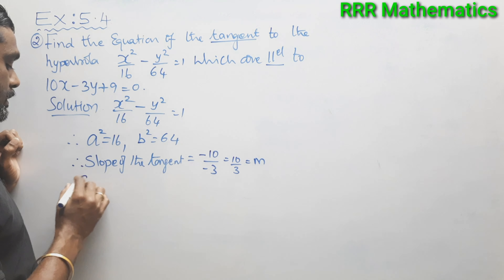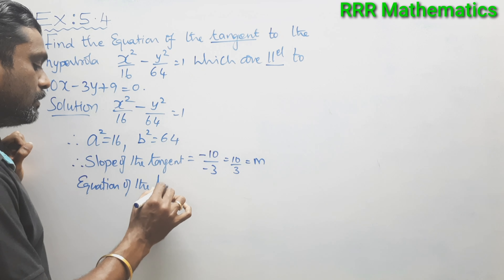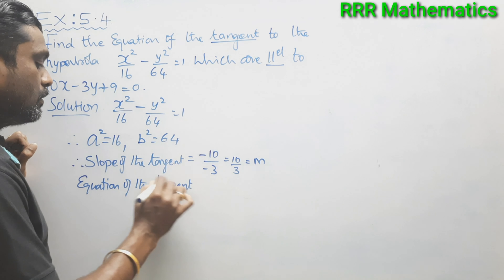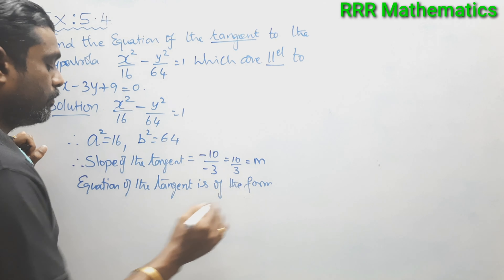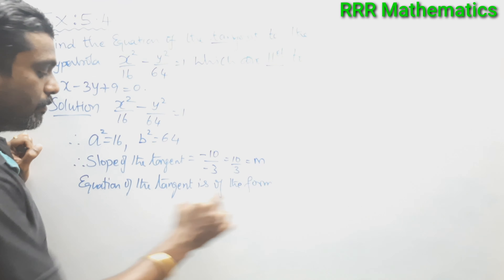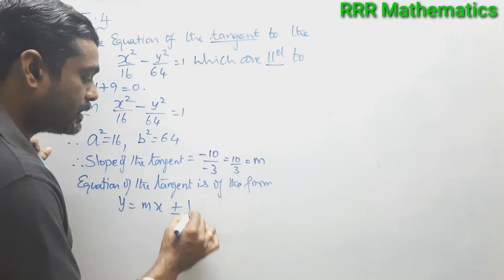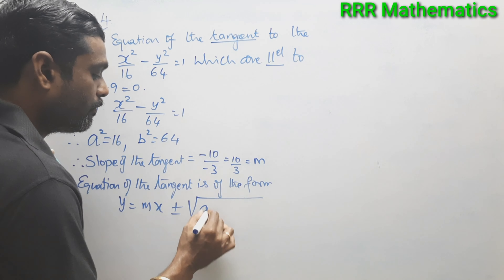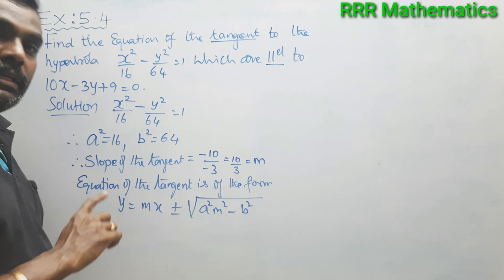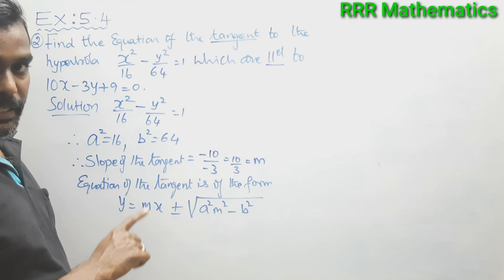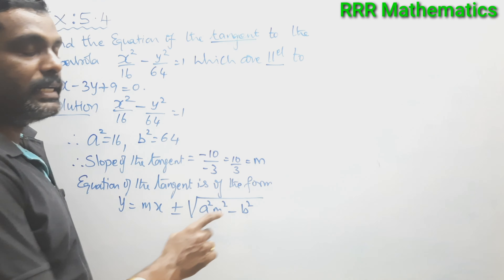The equation of the tangent is of the form y = mx + c, where c = ±√(a²m² − b²).